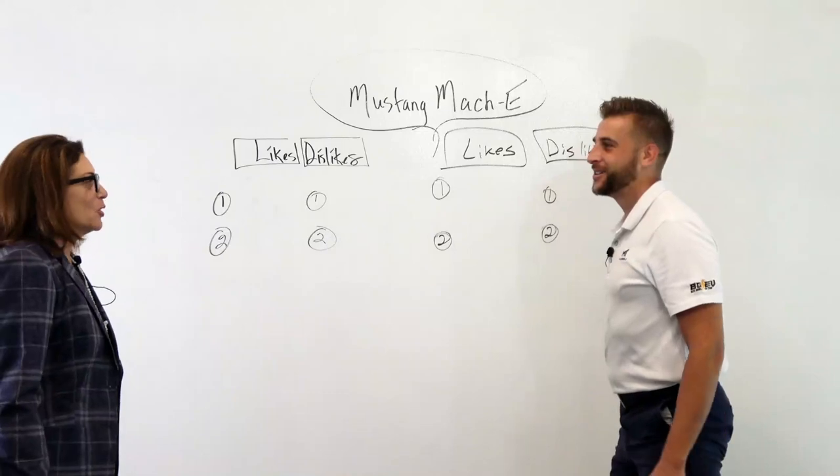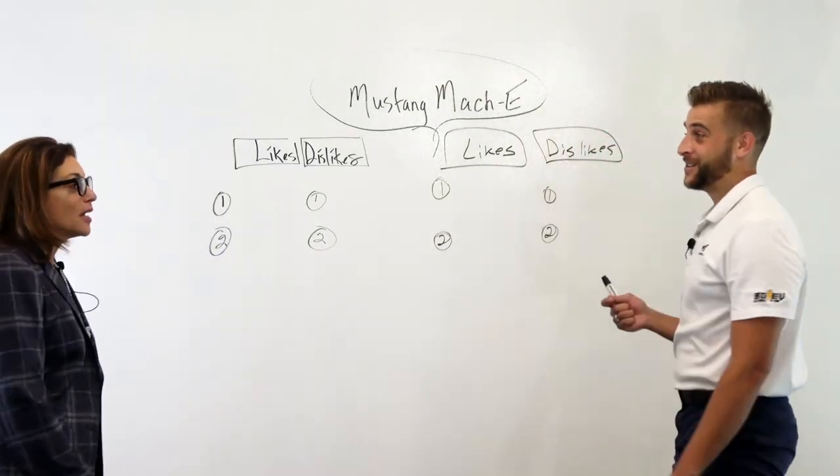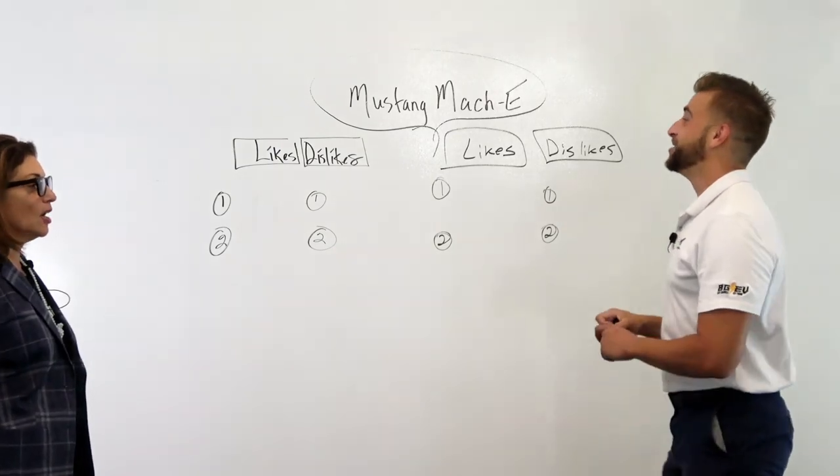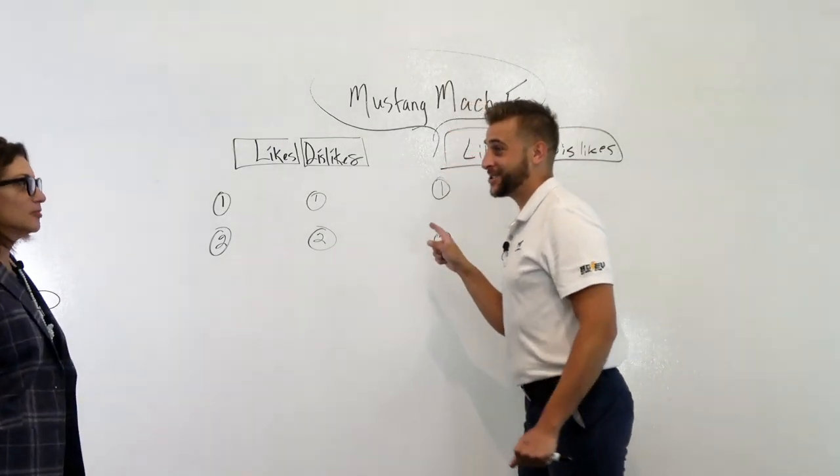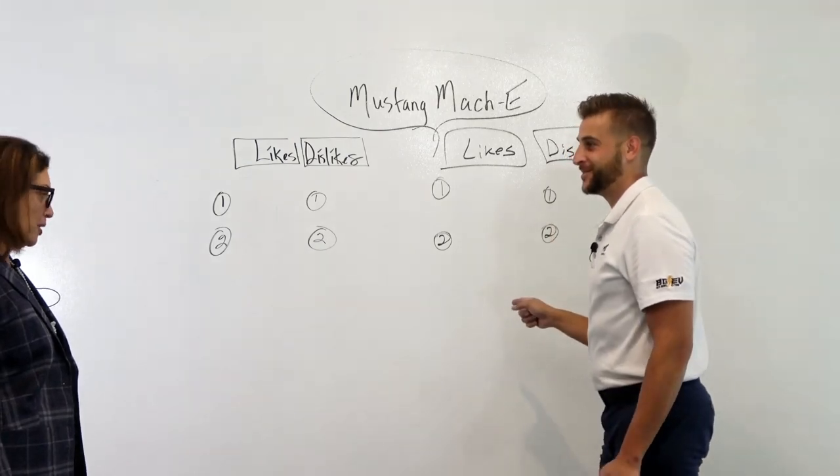Joan. Yes. What are we doing now? We are doing on the wall for the Mustang Mach-E. Two likes, two dislikes. You do it, I do it. And then would you buy it? Okay.